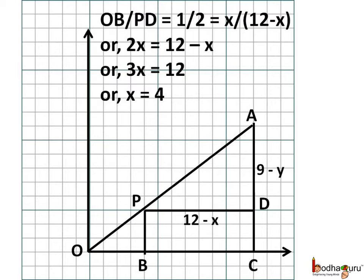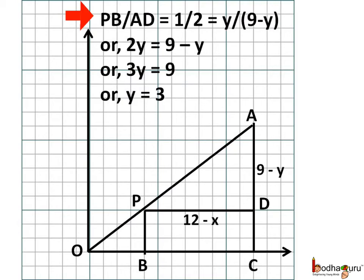And again PB by AD equal to 1 by 2. PB is equal to y and AD is equal to 9 minus y. So y by (9 minus y) is equal to 1 by 2. Simplifying it we get 2y is equal to 9 minus y. That is 3y equal to 9. So y is equal to 3.